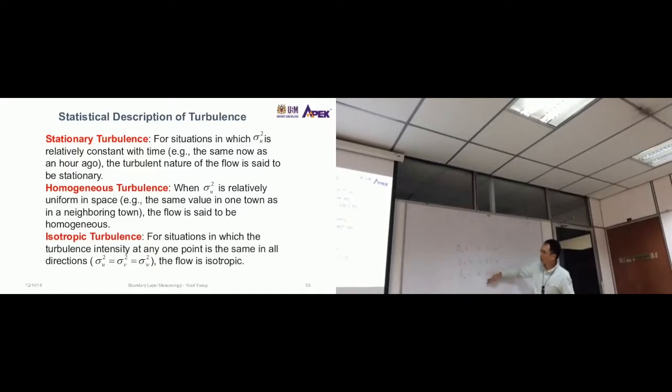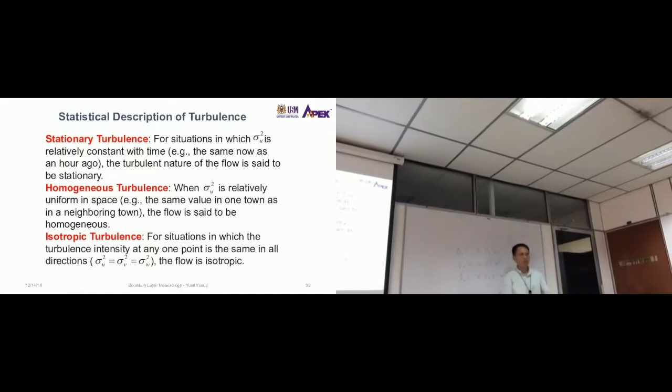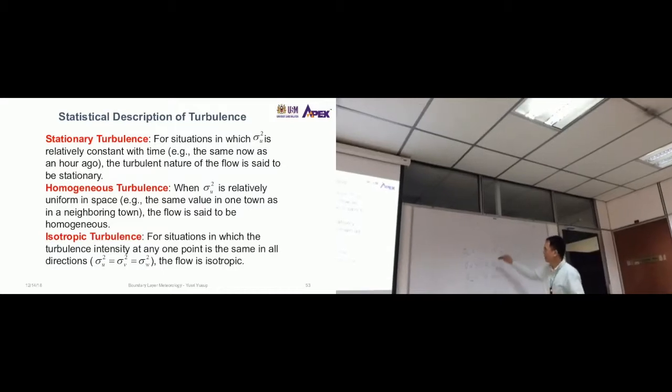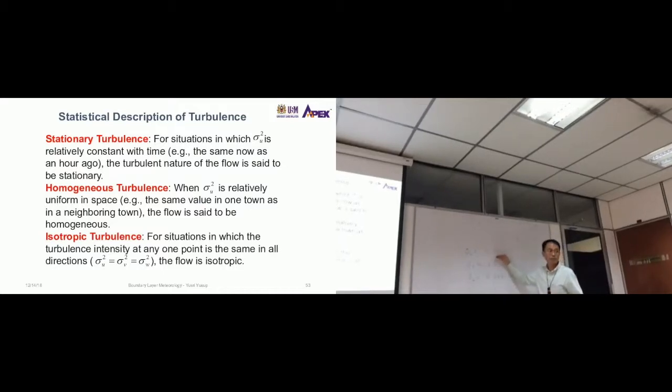So isotropic turbulence is not so common. Maybe in certain regions of the atmospheres where the longitudinal turbulence and the lateral turbulence and the vertical turbulence is the same in magnitude. But here, you see that it's clearly not isotropic. And the surface is not isotropic. But some methods or some approaches assume isotropic turbulence. But the implication of assuming it is that these are the same in magnitude, which they rarely are from my experience.